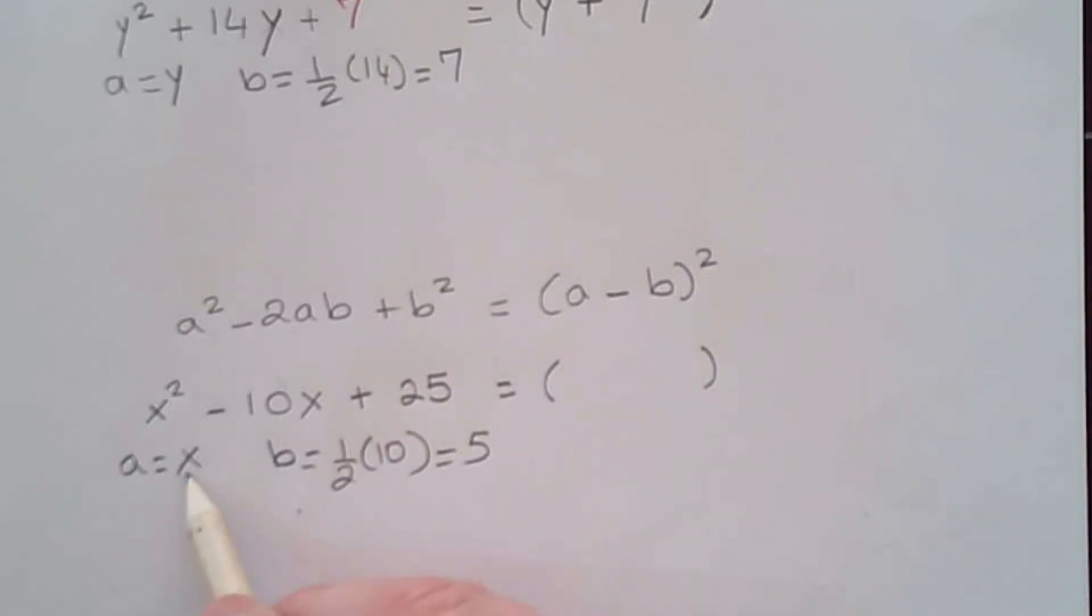a which is x, minus—the middle term is negative—b which is 5, and that squared. We just completed the square.